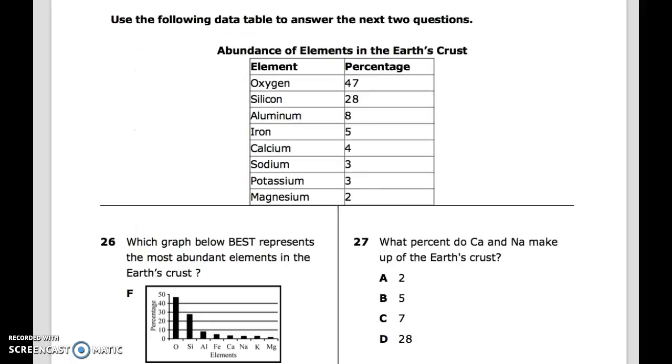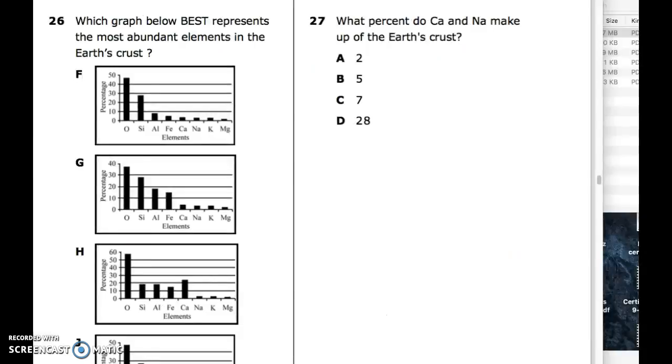Use the following data table to answer the next two questions. Abundance of elements in the earth's crust. Element percent: Oxygen, Silicon, Aluminum, Iron, Calcium, Sodium, Potassium, Magnesium. 26: Which graph below best represents the most abundant elements in the earth's crust? 27: What percent do CA and NA make up of the earth's crust?